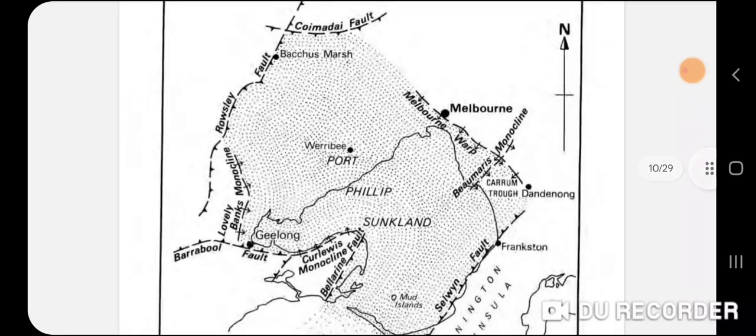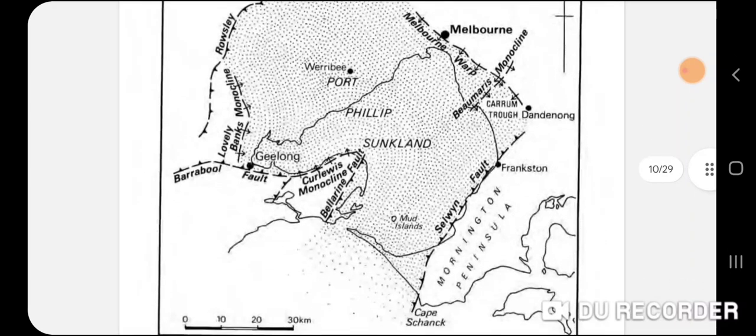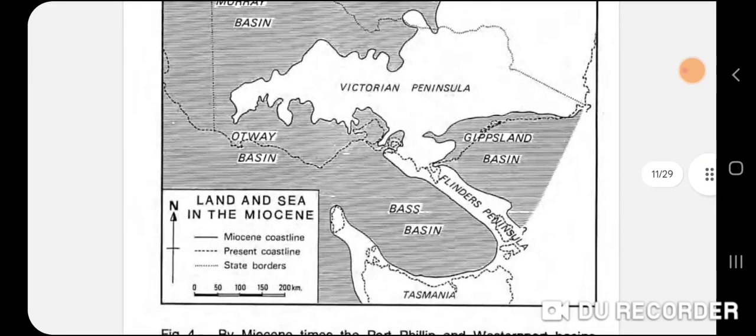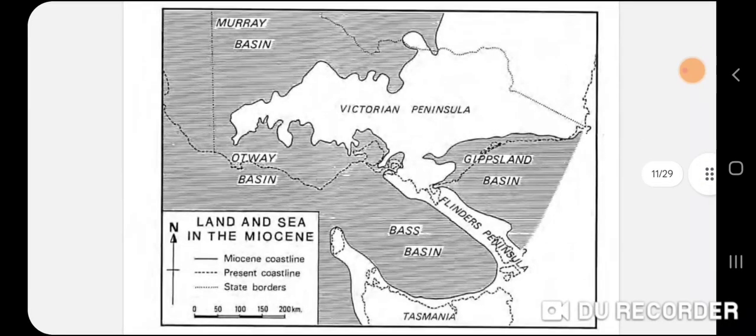The Melbourne fault in the northeast you'd probably barely notice, same as the Belmarris monocline. Then there's the Bearable fault which you can probably sort of see. I think on Monday I'll be going over that so we might have a look.